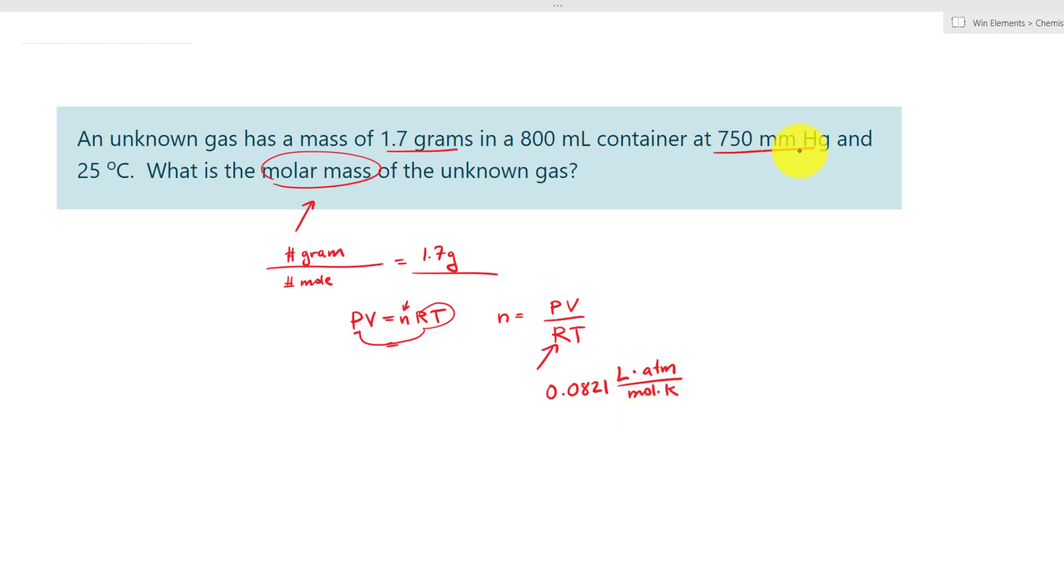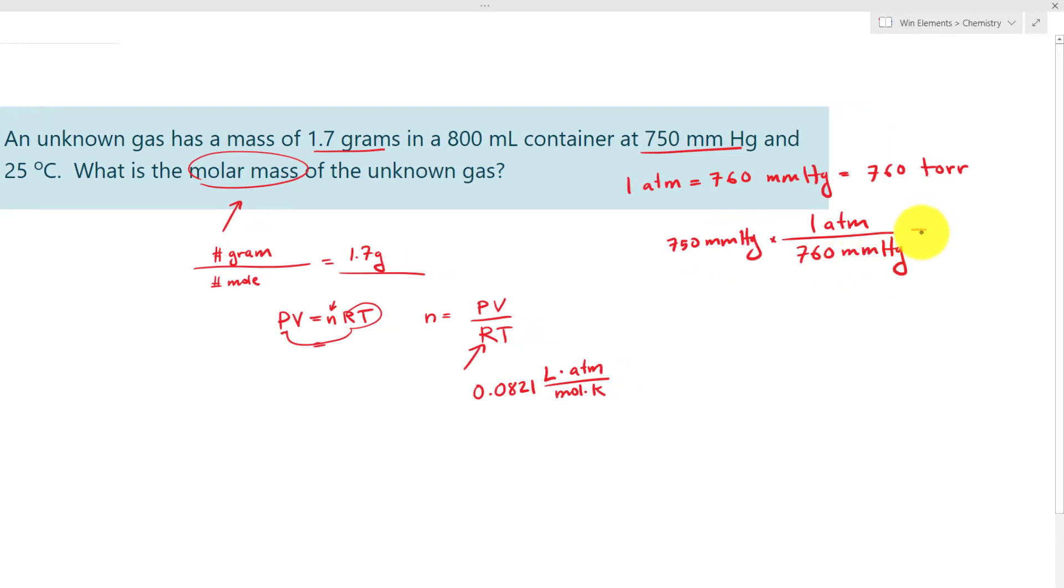So for pressure, we have 750 millimeter mercury. We know that one ATM is equal to 760 millimeter mercury or 760 torr. So we have 750 millimeter mercury times 1 ATM over 760 millimeter mercury. Or 750 divided by 760, if you plug this into your calculator, we have 0.987 atmosphere.